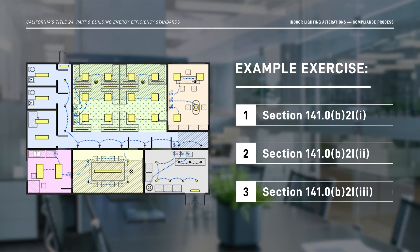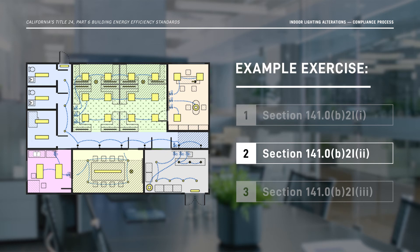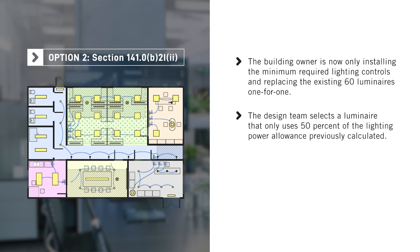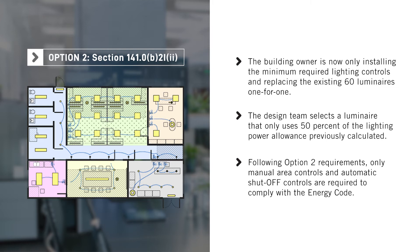Now let's walk through the same office building example using Option 2. The compliance process remains the same, but the information documented in the forms changes. In this scenario, the office building owner finds out their lighting upgrade project budget has been reduced, and now to save on project costs, can only install the minimum required lighting controls and replace the existing 60 luminaires one for one. The design team selects a luminaire that only uses 50% of the lighting power allowance previously calculated, since Option 2 only requires that the alteration project use 80% or less of the indoor lighting power allowed for new construction projects. This means that only manual area controls and automatic shutoff controls are required to comply with the Energy Code.